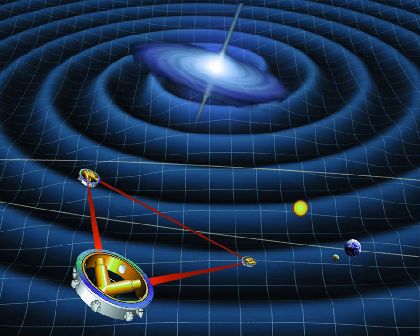Gravitational wave astronomy seeks to use direct measurements of gravitational waves to study astrophysical systems and to test Einstein's theory of gravity. Indirect evidence of gravitational waves was derived from observations of the decreasing orbital periods of several binary pulsars, such as the Hulse-Taylor binary pulsar.